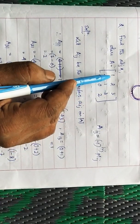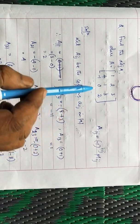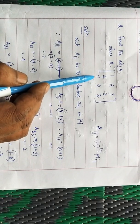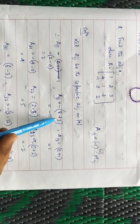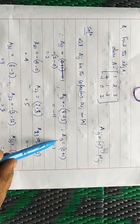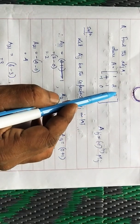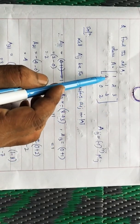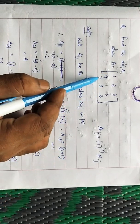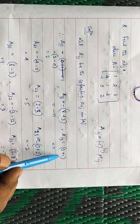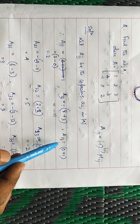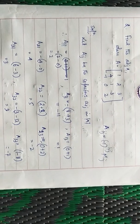For the cofactor of the element at position a12, eliminate that row and column; you get the submatrix with elements [4, 3; −1, 2], which gives 8 − (−3) = 11, but there is a negative sign before it because 1+2 = 3 is odd. Similarly, for the cofactor of the element at a13, eliminate that row and column, expand the resulting submatrix: 4×0 − (−1)×1 = 0 + 1 = 1, and the sign is positive because 1+3 = 4 is even. In this way you can find all cofactors.